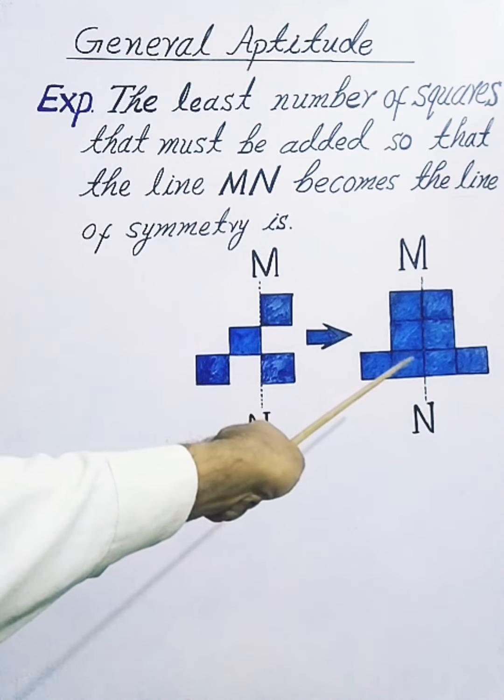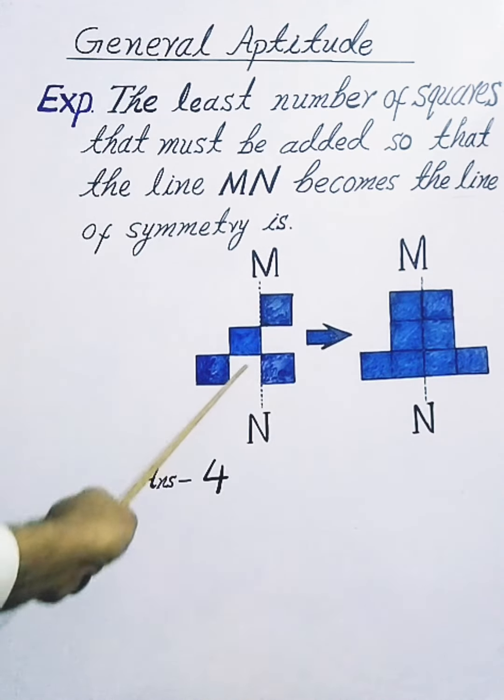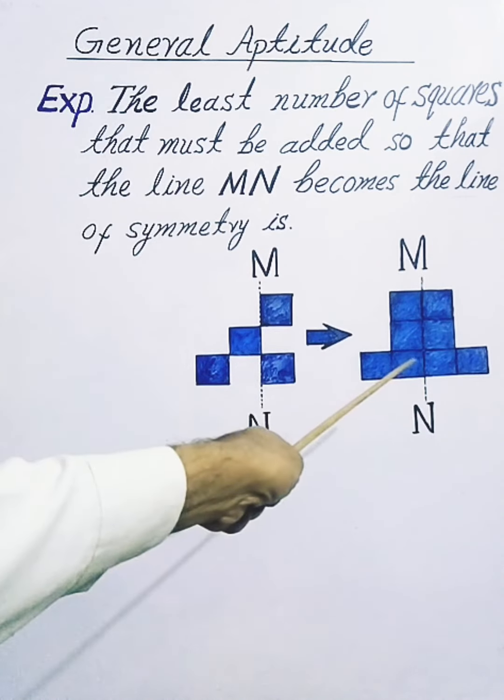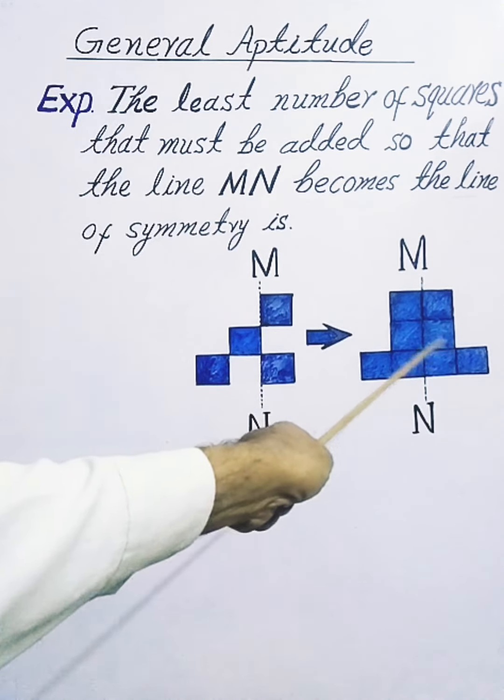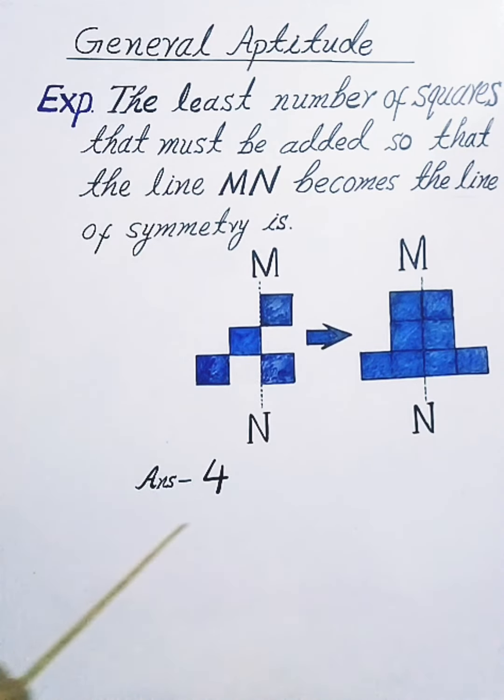The difference between the number of squares in both diagrams: four. And we added four squares to make this line of symmetry. Right-hand side and left-hand side, both shapes are the same. So our answer is four.